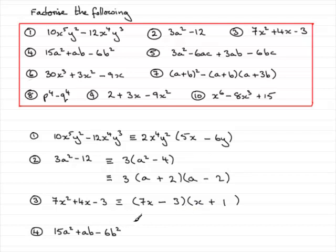Now number 4 is again a trinomial. Look to see whether you've got a common factor. There's no common factors throughout here. So what is this from? This comes again from expanding two brackets.